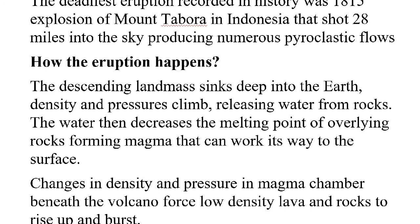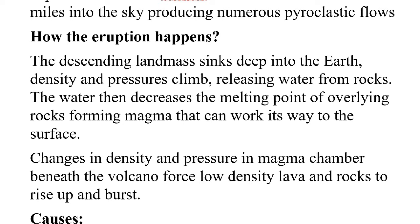How does an eruption happen? Land mass deep within the Earth descends internally. Then the density and pressure of magma change, and the melting point of rocks decreases. Changes in density and pressure in the magma chamber beneath the volcano force low-density lava and rocks to rise up and burst out to the surface.